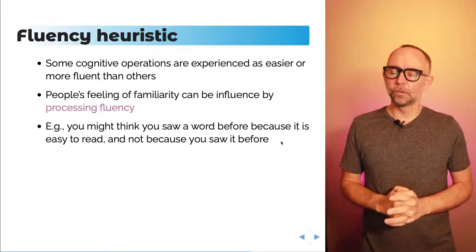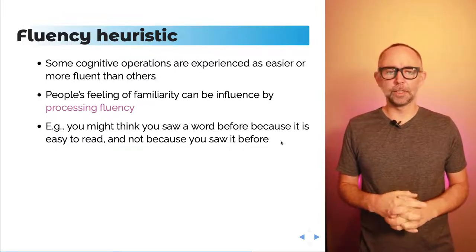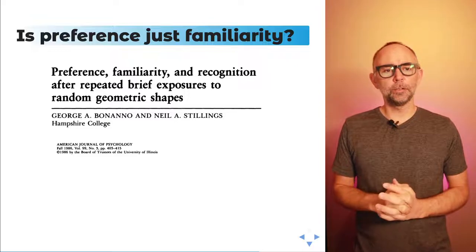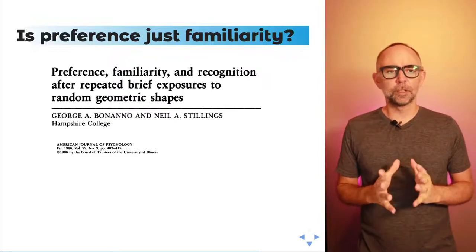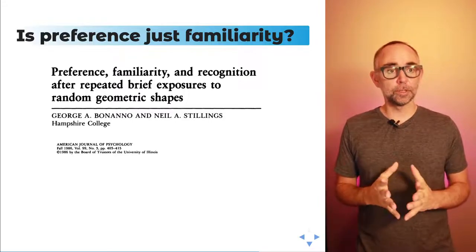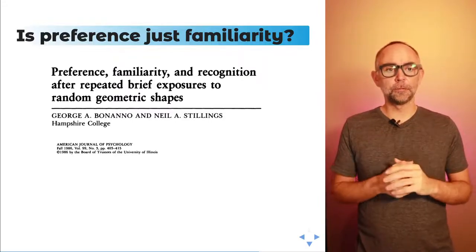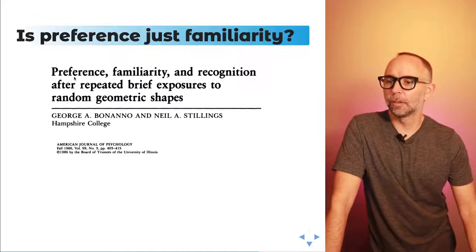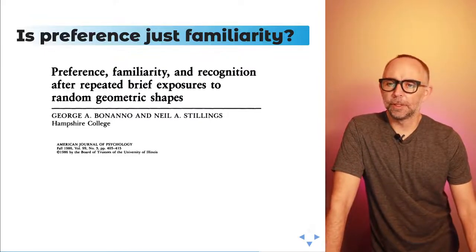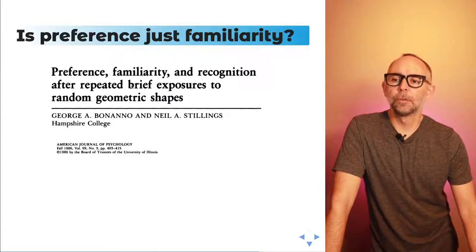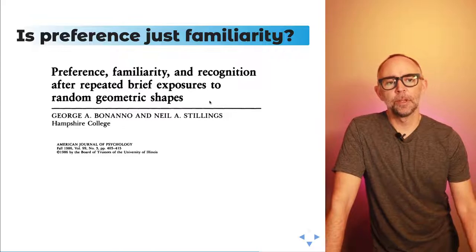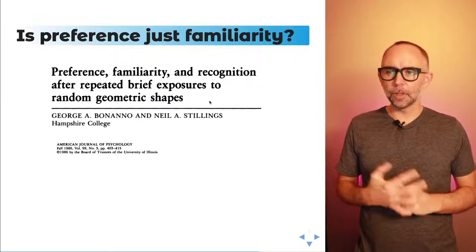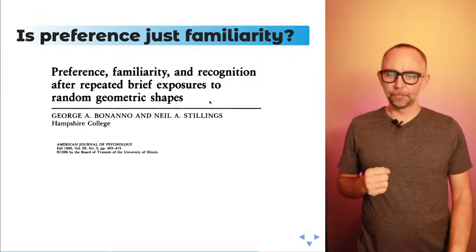These researchers in 1986 were wondering whether the results of mere exposure experiments could be interpreted from the perspective of a distinction between familiarity and recognition. So Bonanno and Stillings ran an experiment — the paper's titled 'Preference, Familiarity, and Recognition After Repeated Brief Exposures to Random Geometric Shapes.' They ran the same kind of experiment, presenting people with random geometric shapes very quickly, and they asked three questions.